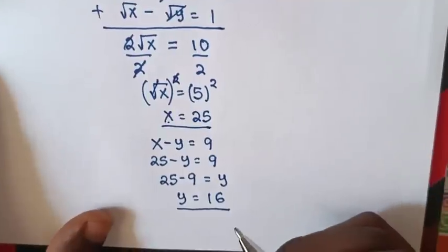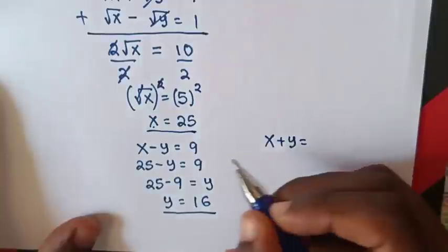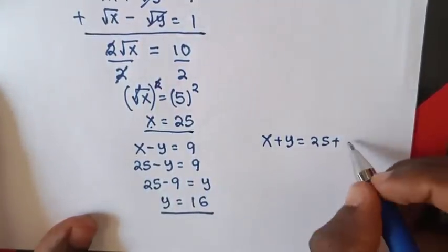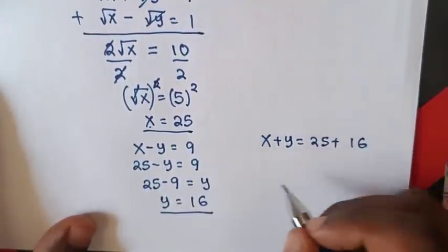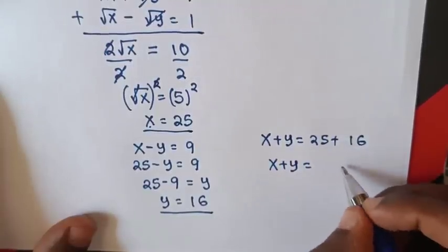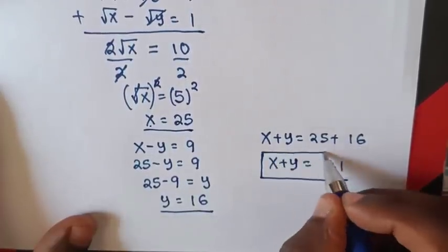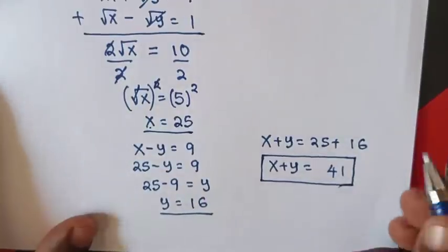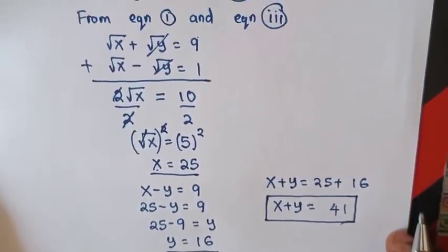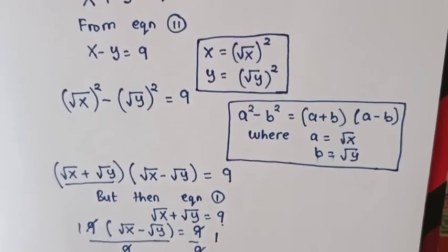To find x plus y: x plus y equals 25 plus 16, which equals 41. Therefore, the value of x plus y is 41. Don't forget to subscribe to my channel and see you in the next video. Bye-bye.